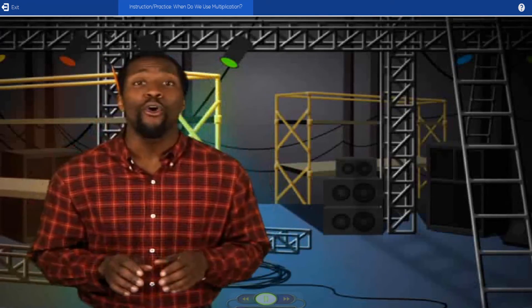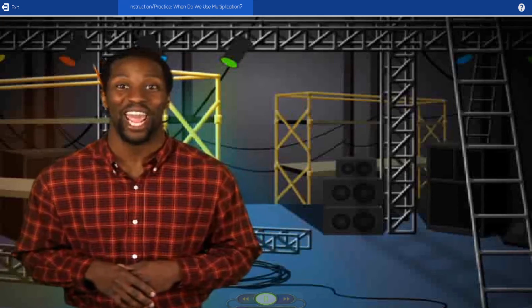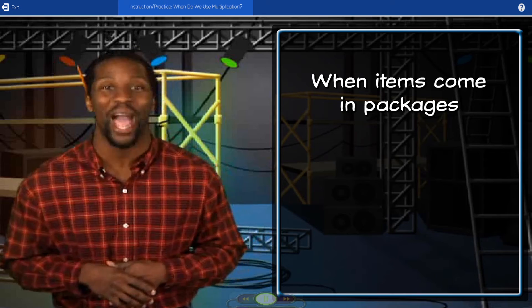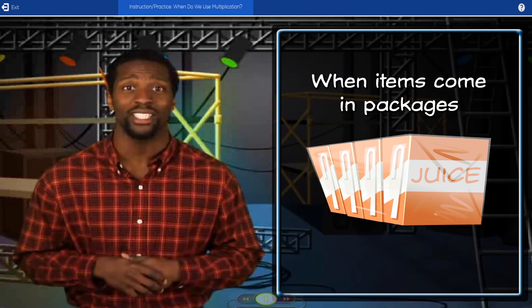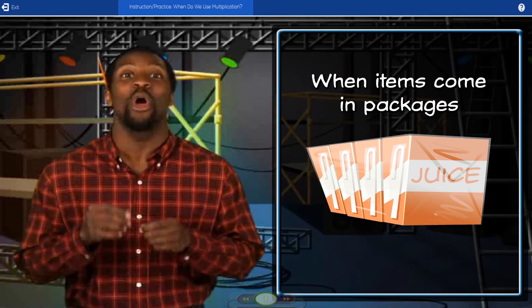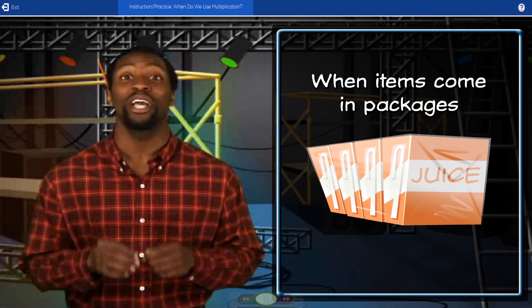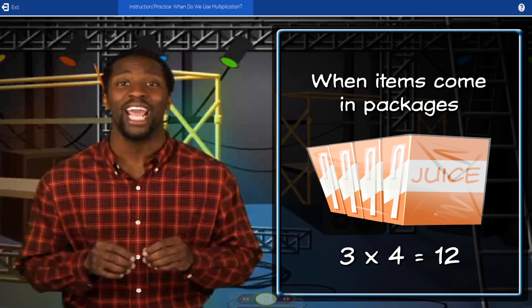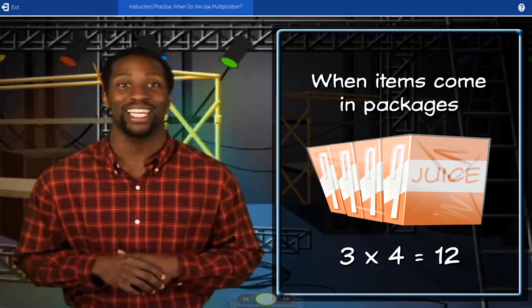Anyway, there are four common situations when multiplication will help you find the answer. One common situation is when items come in packages. Remember when JT counted the packages of juice boxes? In each package was the same amount of juice boxes: four. Because there was the same amount in each package, we can use multiplication to find the total number of juice boxes in any given number of packages.